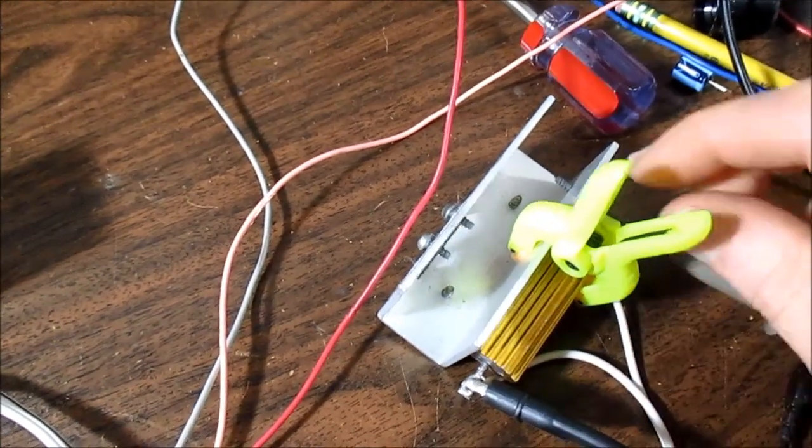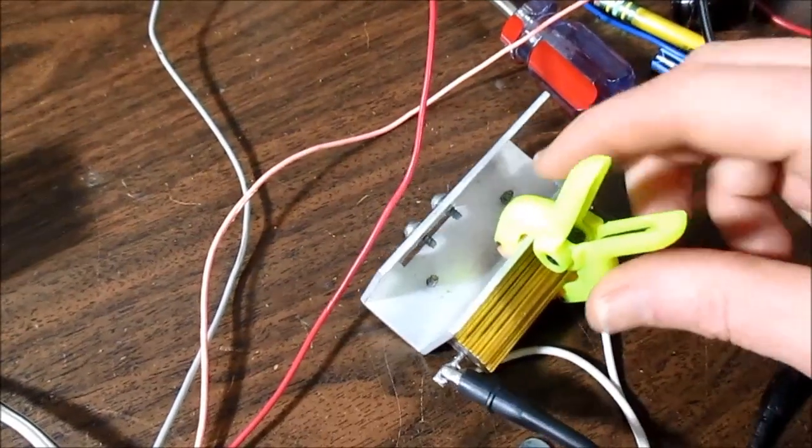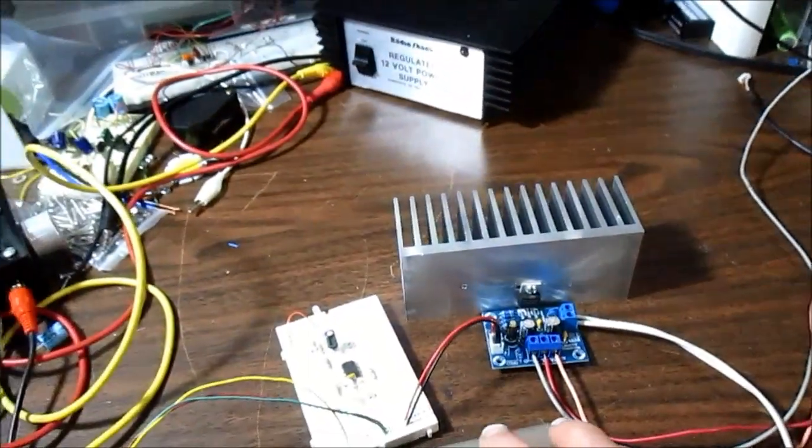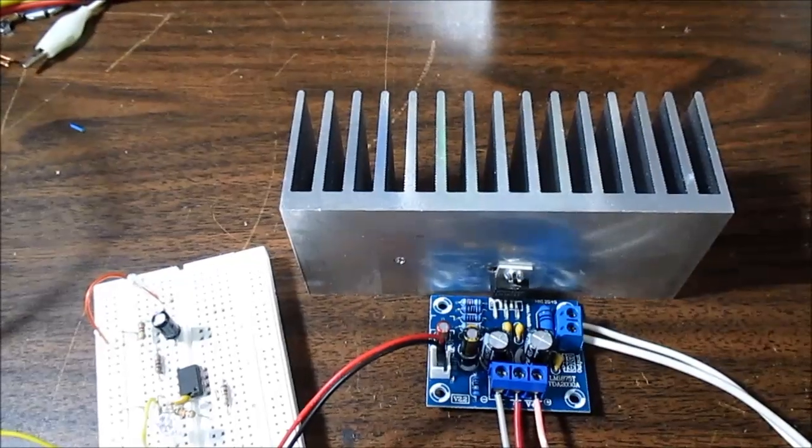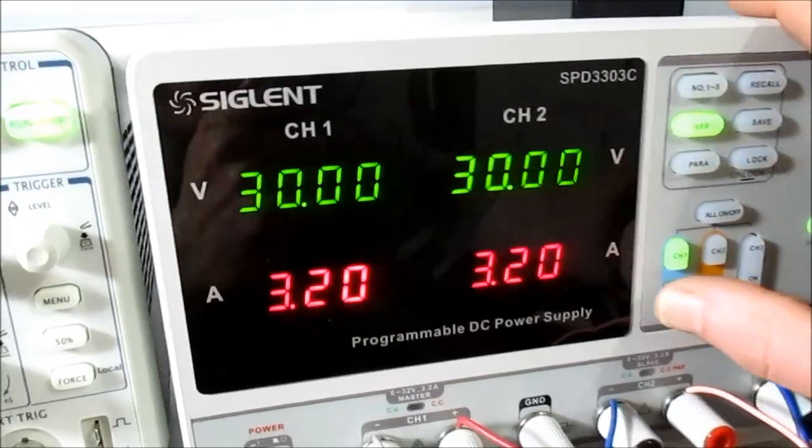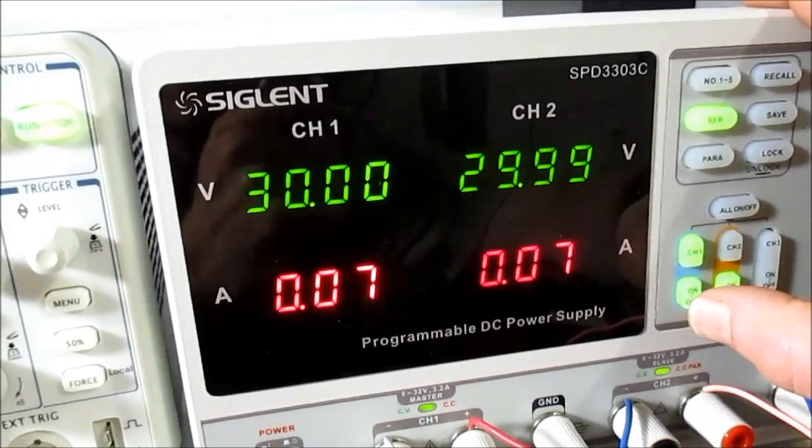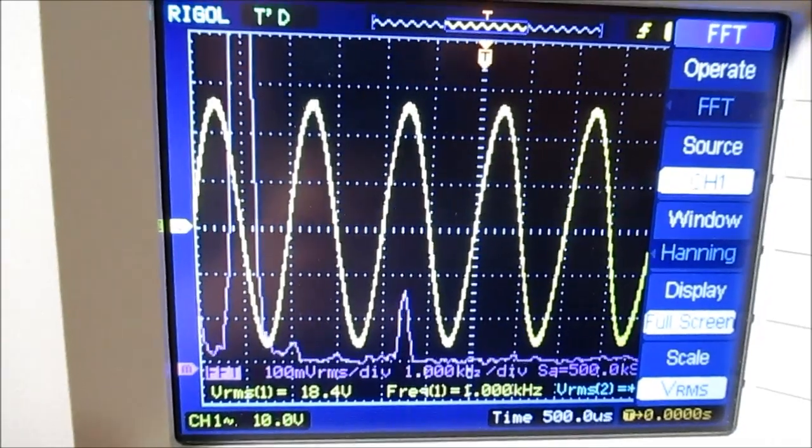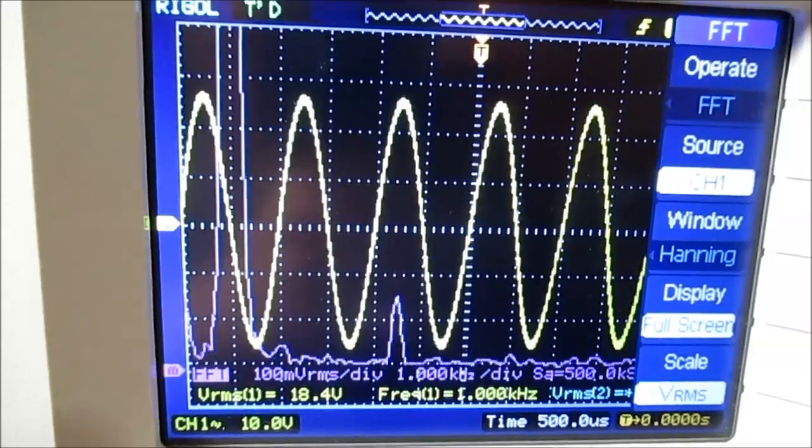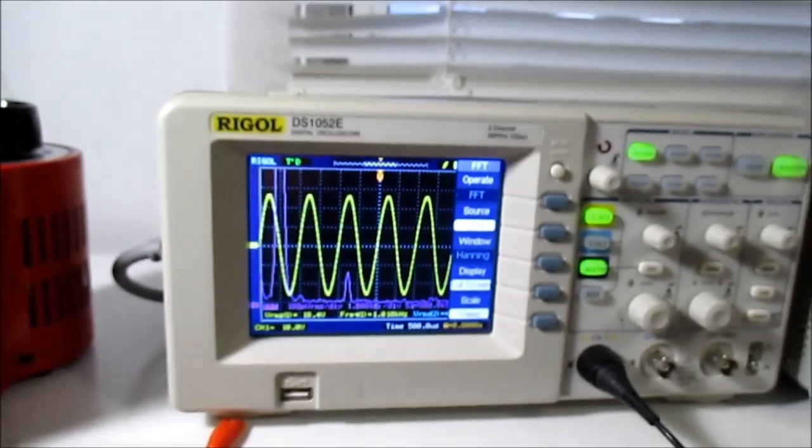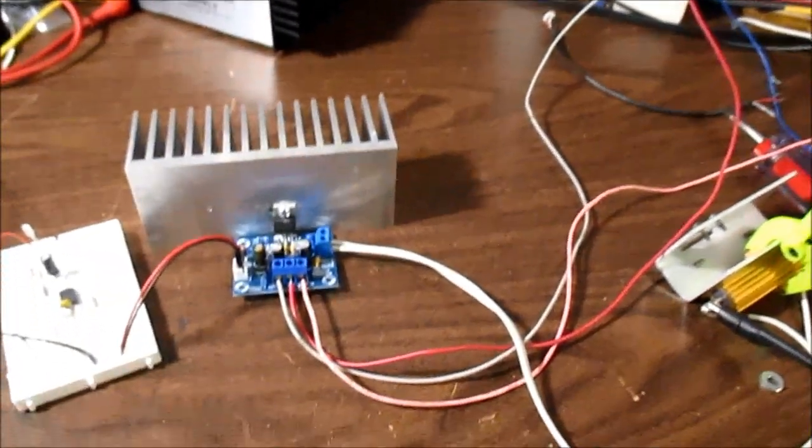I've hooked up the 8 ohm load and clamped it to the heat sink because it will get hot quick. The maximum voltage this chip will take is 60 volts, or plus and minus 30 volts. Let's let it roar. It looks like the maximum point before clipping is 18.4 volts with the 8 ohm load.